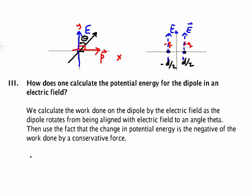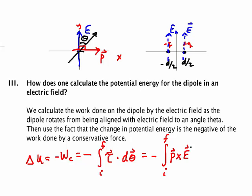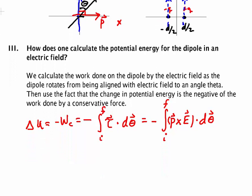Let's calculate the work. Well, the change in potential energy, as I said, is equal to minus the work conservative, and that's equal to minus the integral from the initial to the final orientation of the torque applied to the dipole dotted into its displacement change, which is equal to minus the integral from initial to final of the dipole crossed with the electric field dotted into d theta vector.